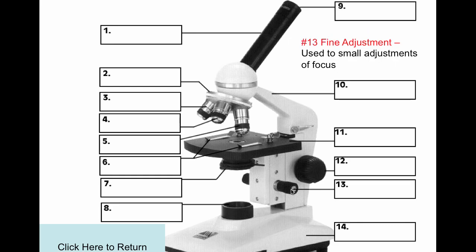Number 13 is called the fine adjustment knob. It's used to make small adjustments to the focus. Number 14 is the base. It's used to support the microscope and help transport it.